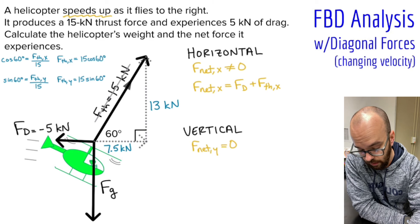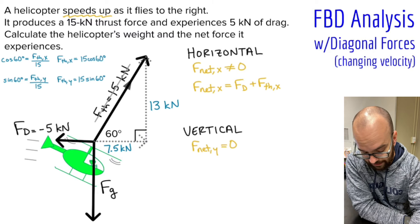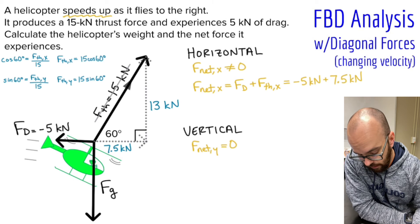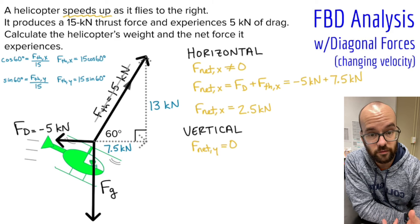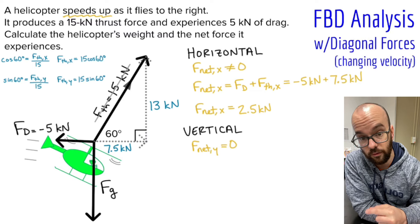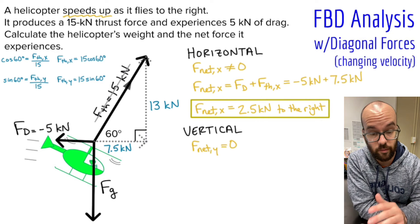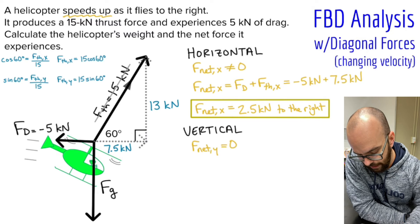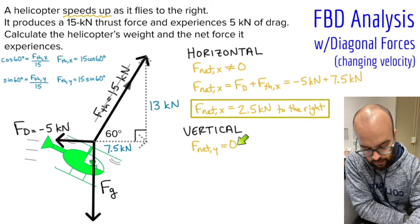So let's sub in for what we know. I can't sub in for this yet because we know it's not zero, but we don't know what the net force in the horizontal is yet. I know the drag is negative 5, and I know the thrust force is 7.5. When I add those together, I get Fnet X equals 2.5 kilonewtons, or positive 2.5 kilonewtons. That positive specifically means that those kilonewtons of force are to the right, because remember, I'm looking horizontally. So my Fnet for this problem is 2.5 kilonewtons to the right. I don't have to worry about any vertical component of that Fnet, because we said Fnet in the vertical is zero newtons.